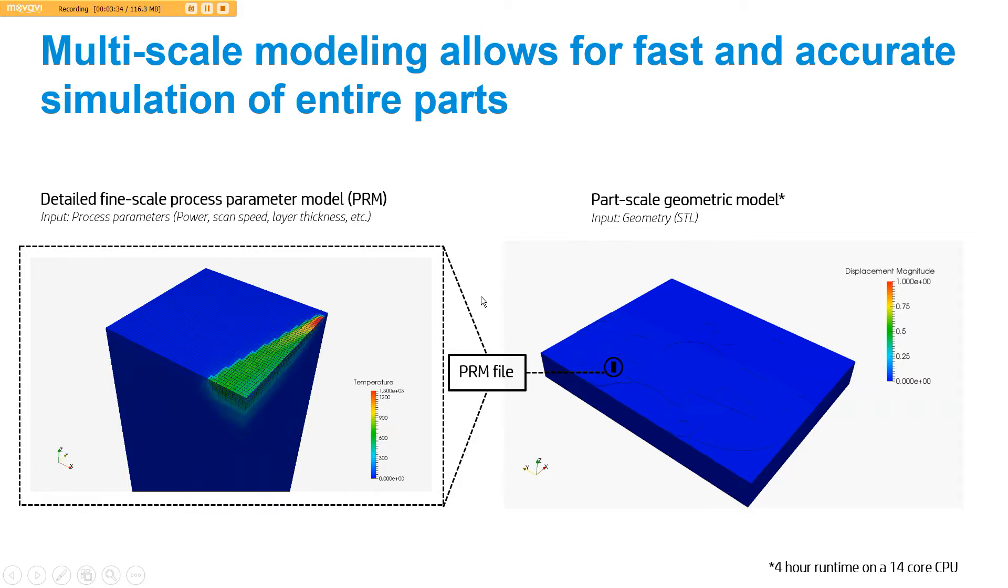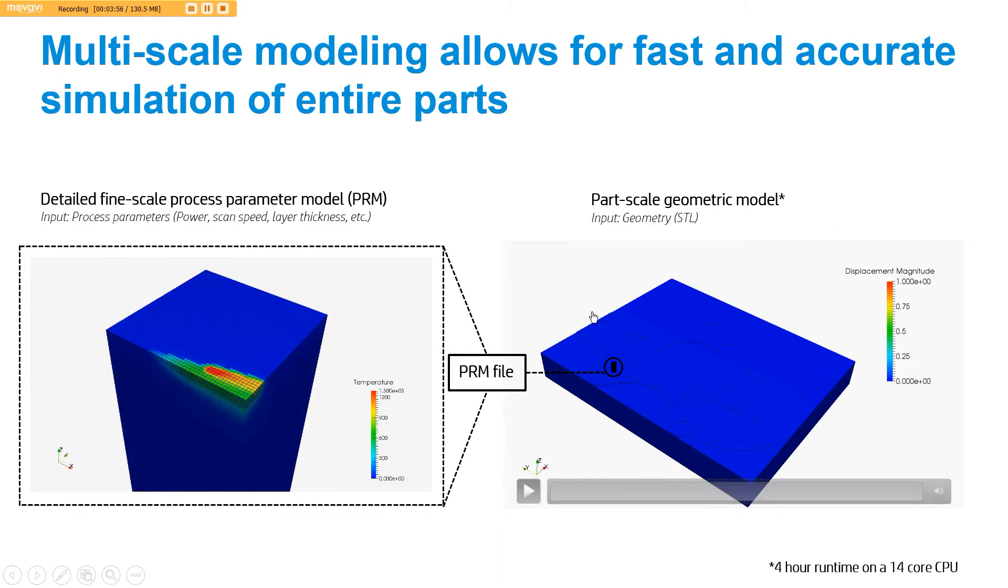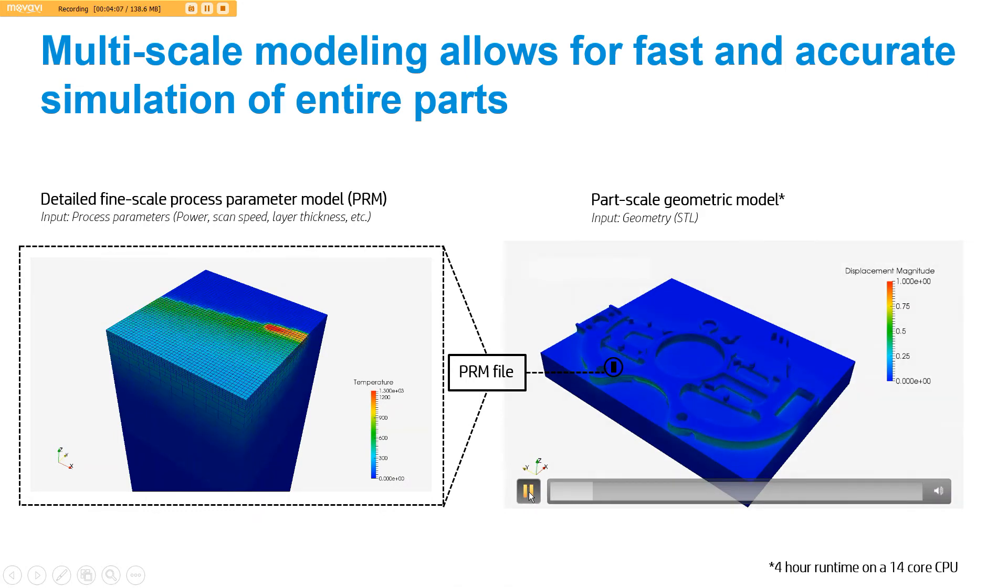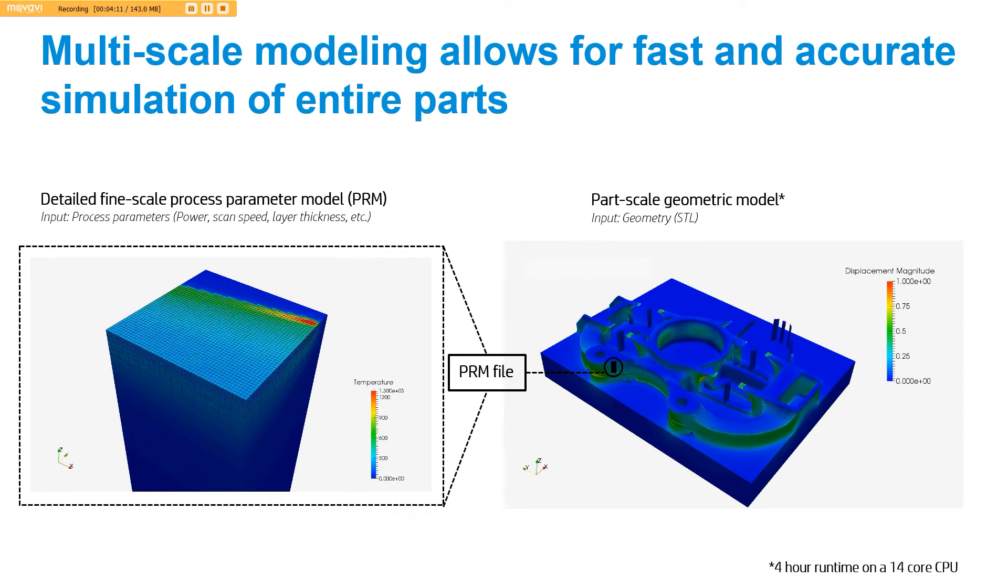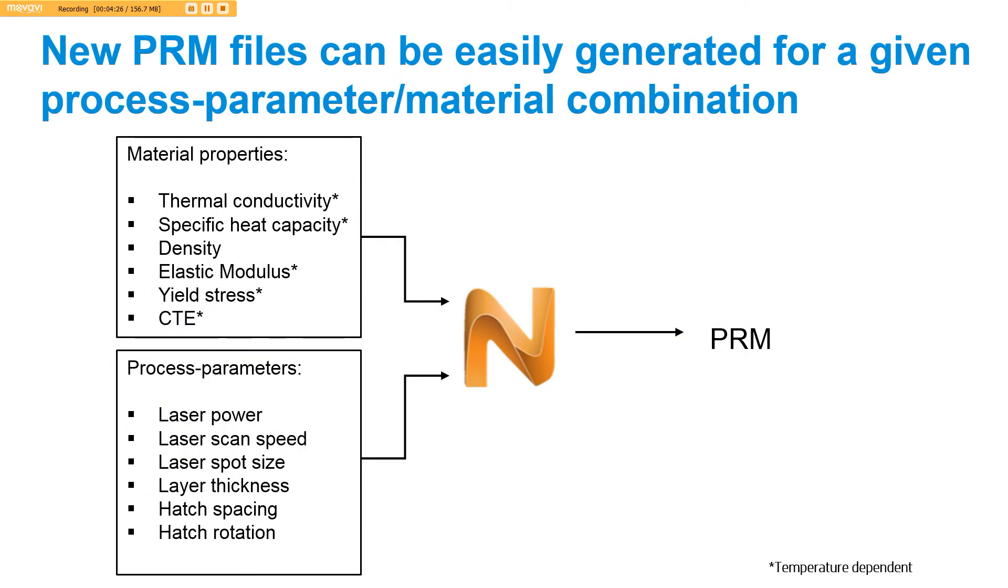Once we have that PRM file, we can take this information and start to stitch some of these blocks of material together. Since we also got an understanding of how the layers are going to mechanically interact with one another, we can start to pile those layers up and actually map those onto a geometry. While this scale was a millimeter by a millimeter, this scale is 240 millimeters along this dimension, taking up almost the entire build volume. Now we can start to take this information and map the thermal and mechanical response onto a full geometry. You can actually see it building in situ. This example ran in four hours on my 14-core Autodesk-issued desktop, so very fast run times.